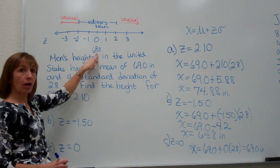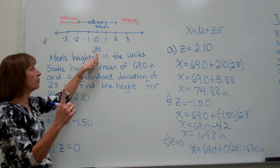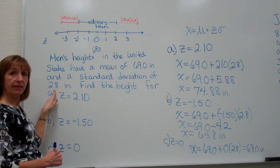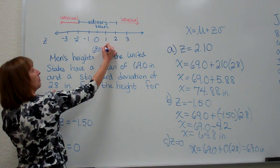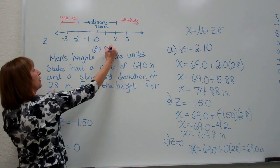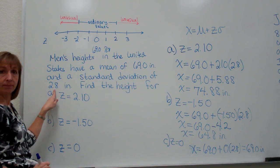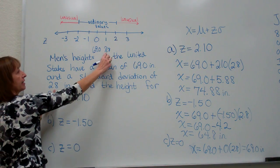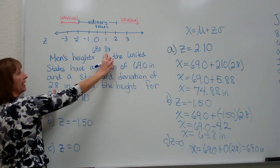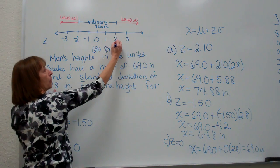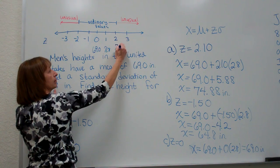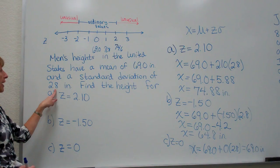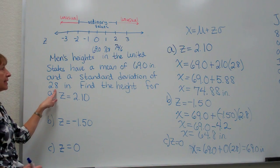And if I want the raw score that is exactly one standard deviation above the mean then I am going to take my 69.0 and add my standard deviation 2.8. So that is going to give me my 71.8 when I add that on. If you want to add another standard deviation then I will take the 71.8 and add a 2.8 again and that will give me 74.6. And if I take the 74.6 and add a 2.8 again I will get 77.4.